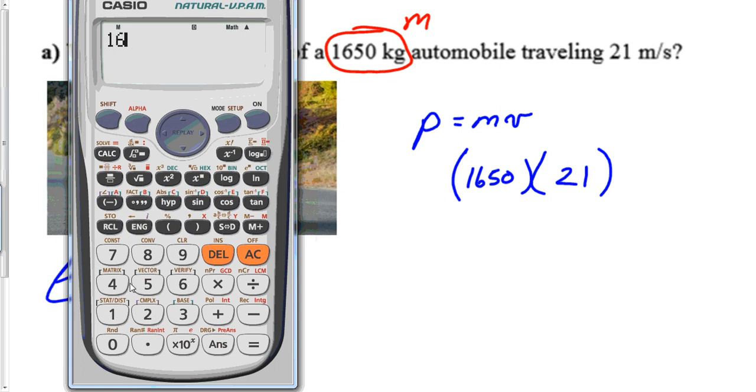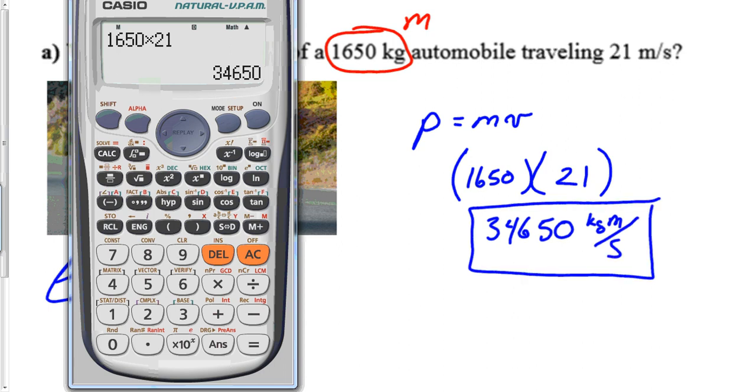Let's do a little calculator-isms here. 1650 times 21 equals 34,650. The unit should be kg⋅m/s. However, if you were going for sig figs, your answer would have just been 35,000 kg⋅m/s.